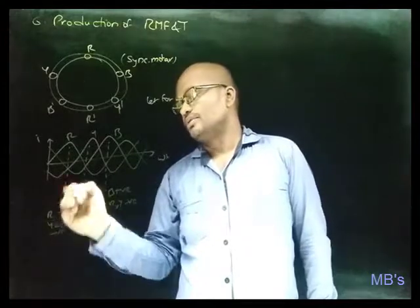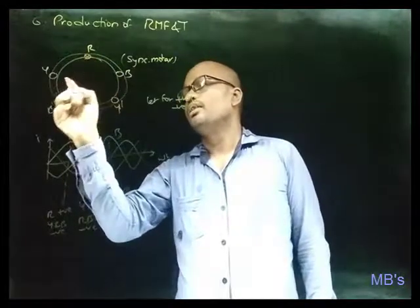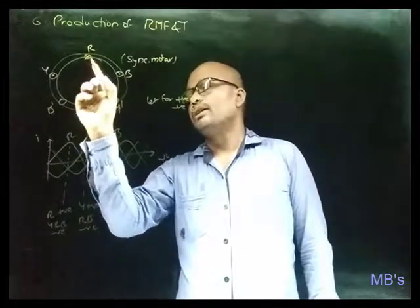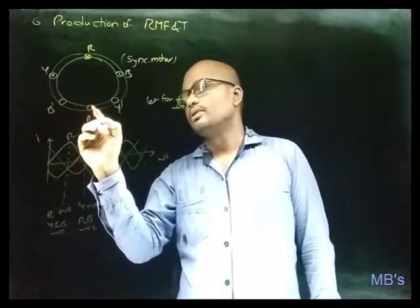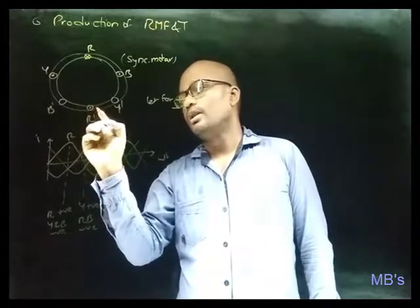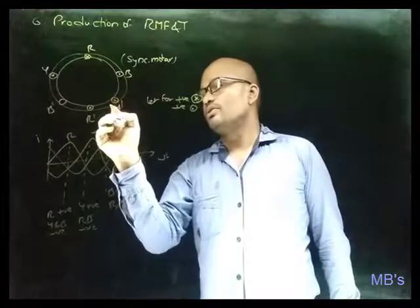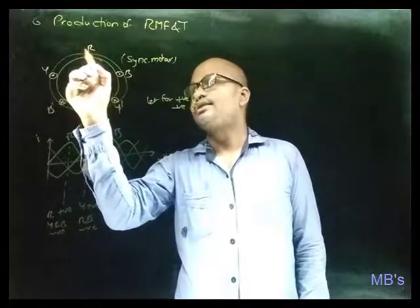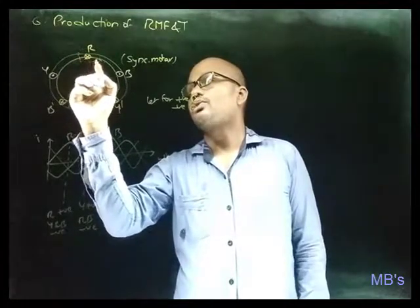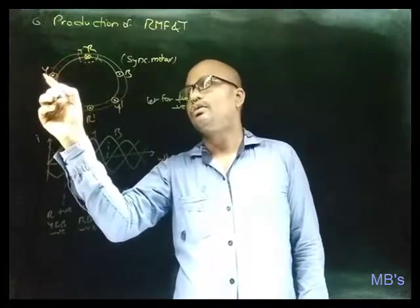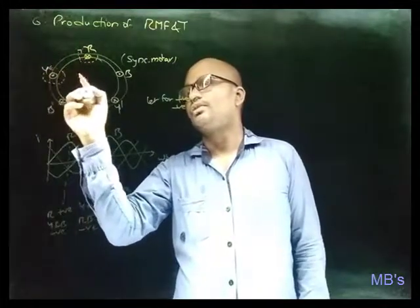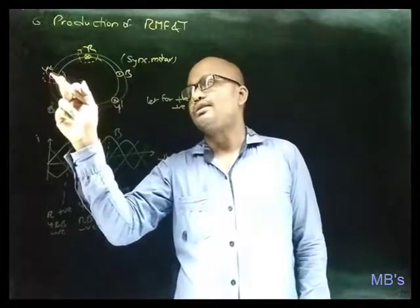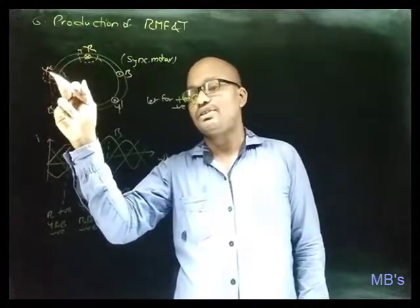In the positive instance, R positive means cross convention, and Y and B negative means dot convention. The exactly opposite end of the conductor will have the other direction of current. This is cross and this is cross. To find the pole formation, let's apply the cork screw rule. As it is dot, the flux direction will be anticlockwise.